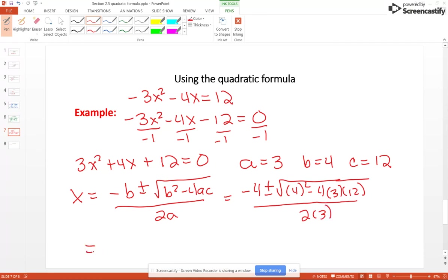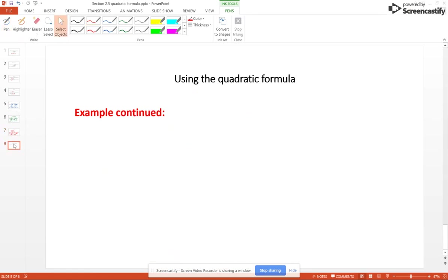And that's going to be negative 4 plus or minus 16 minus 144 over 6, and that's going to give me negative 4 plus or minus the square root of negative 128 over 6. Now I'm going to take that down to the next page just so we will have enough room here.